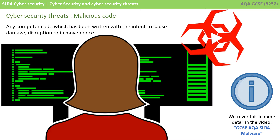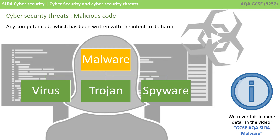Next up is malicious code. This is any computer code written with the intent to cause damage, disruption or inconvenience. There are many forms and categories of malicious code such as viruses, trojans, spyware and many more, and they all fall under a kind of umbrella term that we simply call malware. We have another video called malware that's going to look at this in more detail later on.